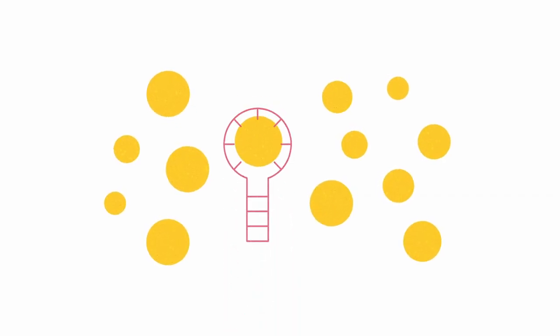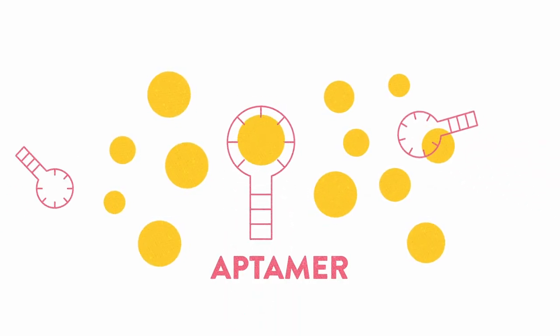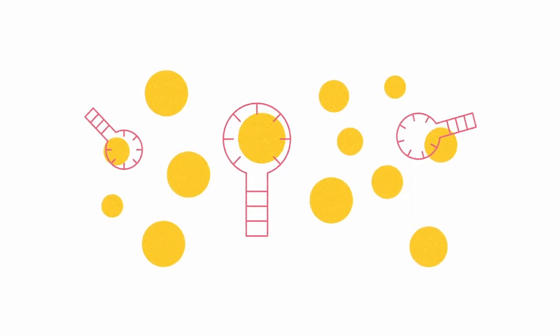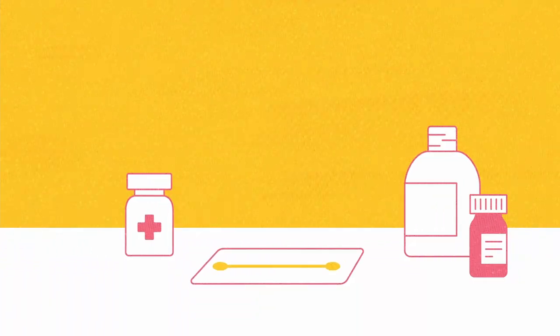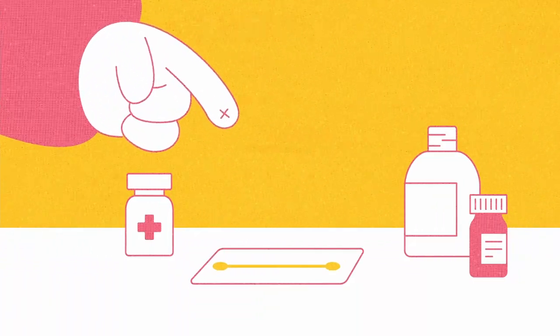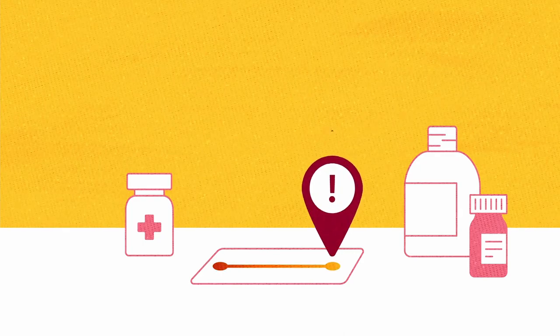Our detection system uses aptamers as biosensors, evolved by in vitro experiments to bind to vitamins. In combination with the cell-free system, vitamins can be quantified in a paper-based microfluidic chip by means of a colorimetric readout.